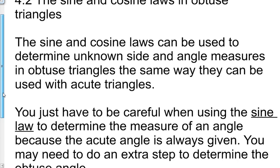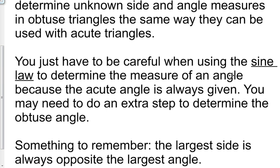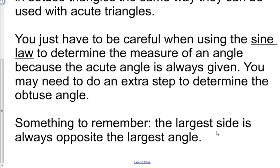There's just one difference: you have to be careful when using the sine law to determine the measure of an angle, because an acute angle is always given. You may need to do an extra step to determine the obtuse angle, namely take 180 degrees and subtract the acute angle that you find. Something to remember: the largest side in a triangle is always opposite the largest angle.